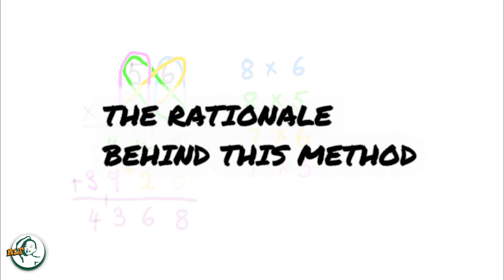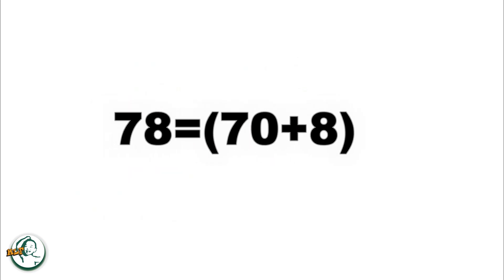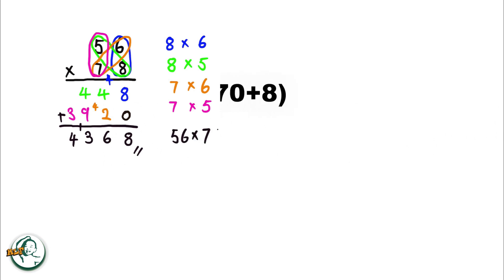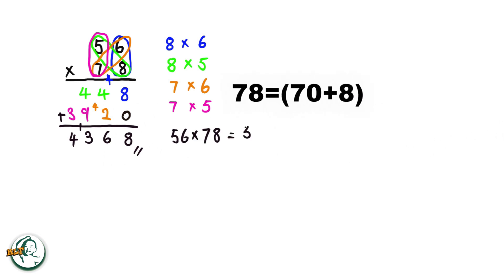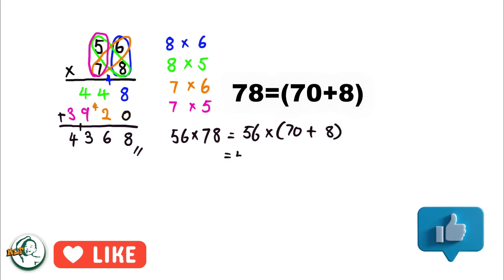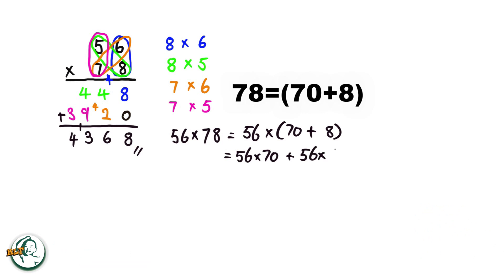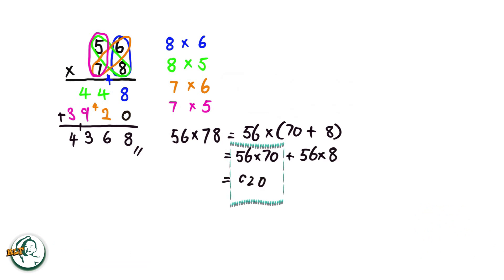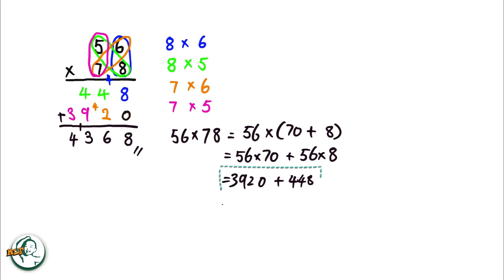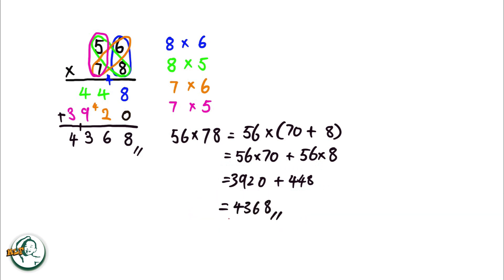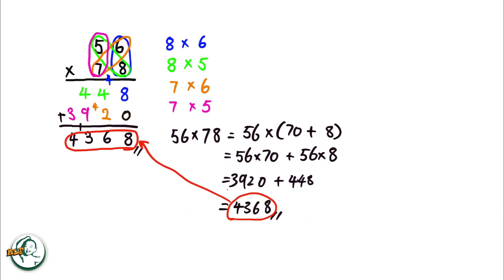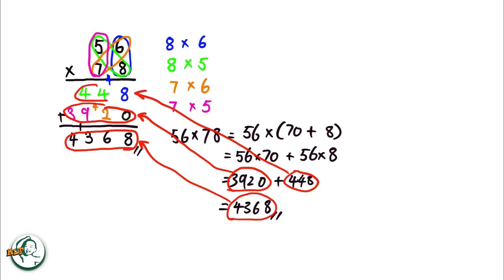Let's delve into the rationale behind this method. Consider 78 as 70 plus 8. We can express 56 times 78 as 56 times (70 plus 8). This expands into 56 times 70 plus 56 times 8, giving us 3,920 and 448 respectively. Adding these, 3,920 plus 448 equals 4,368. This explains why we need to add these two numbers in the column method.